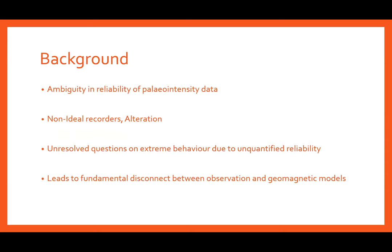Fundamental questions about the extreme behavior of the geodynamo will remain unsolved in large part due to the reliability of the data being poorly quantified. Because of this, there exists a disconnect between the observations and theory. This ambiguity in paleointensity data can arise from a number of detrimental effects such as non-ideal behavior or alteration. When disconnects arise, these effects can often be used to explain any disagreement, raising the question of whether an overhaul of how we quantify data reliability is needed, or if current geodynamo theories need overhaul.